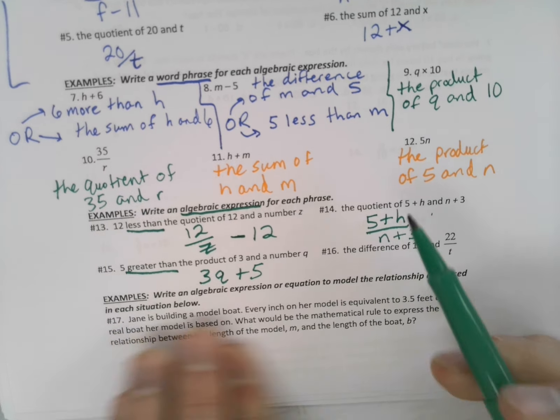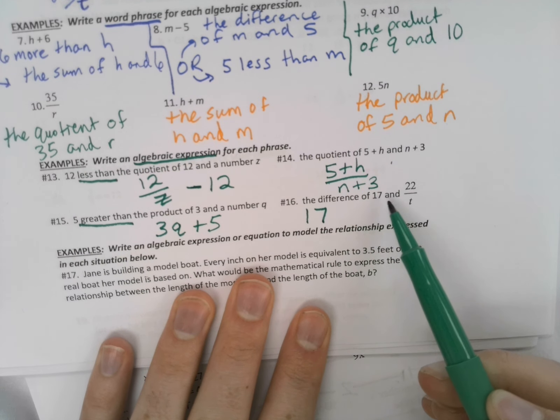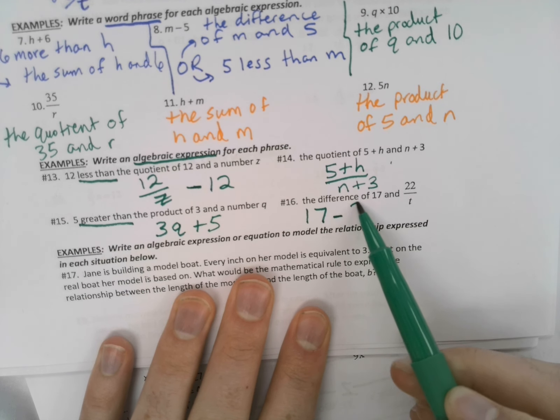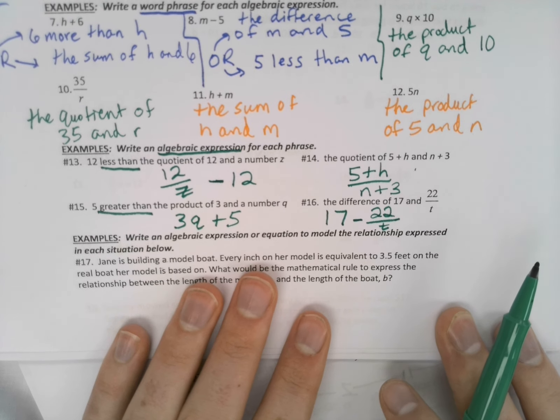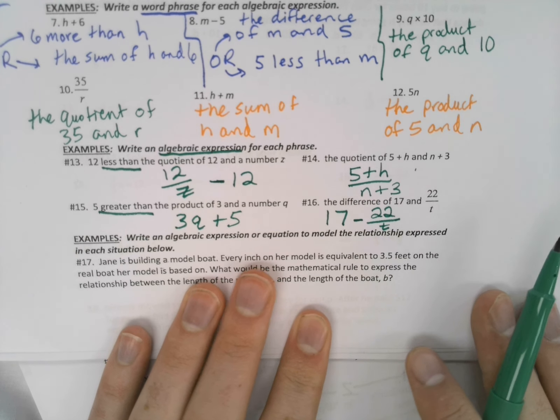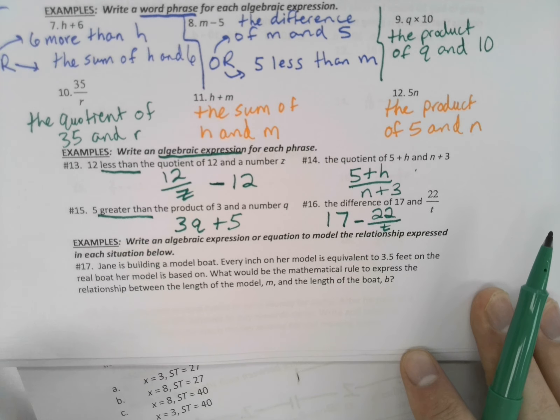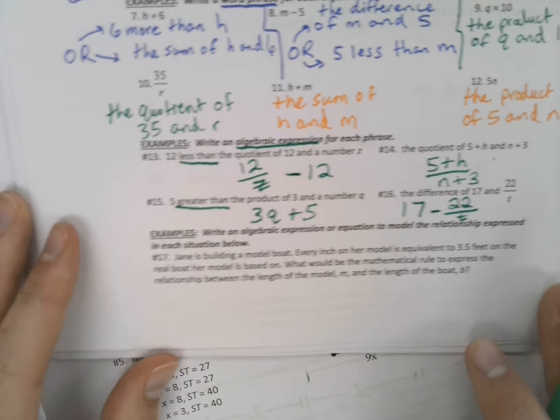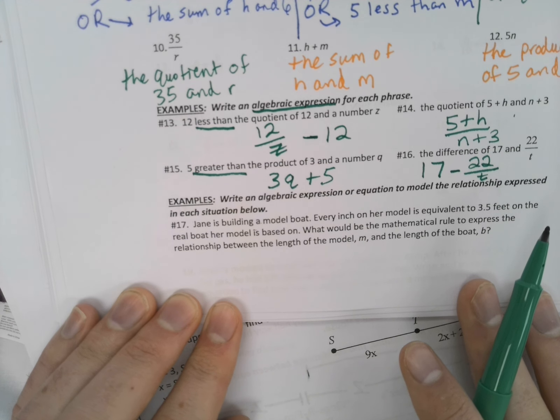And then finally, the difference. We know difference means subtraction of 17. So 17 minus 22 over T. How are we feeling, guys? I'd say some of you worked ahead and were able to go 4 for 4 on that, which is awesome.